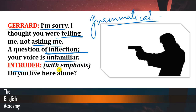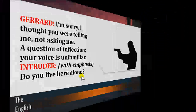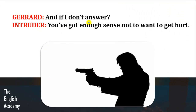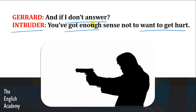Intruder replies with emphasis: 'Do you live here alone?' Now he is properly asking. Gerard replies: 'And if I don't answer?' Intruder says: 'You've got enough sense not to want to get hurt.' Toh intruder usse dhamki de raha hai — woh usse threat kar raha hai ke agar tum mere sawalon ka jawab nahi doge, toh mein tumhe injure kar sakta hoon, goli maar sakta hoon.